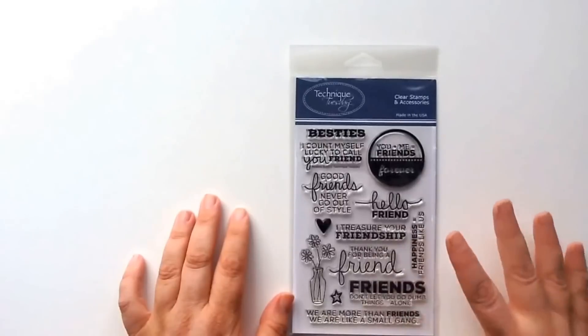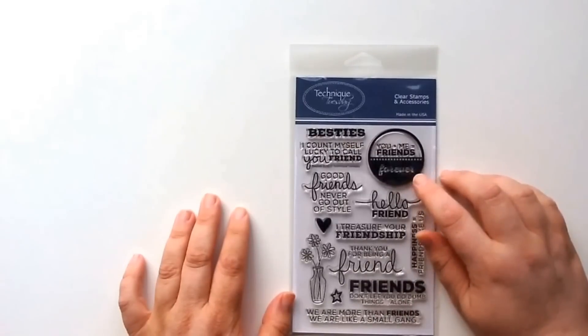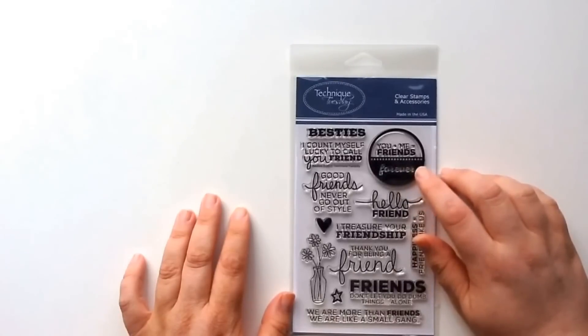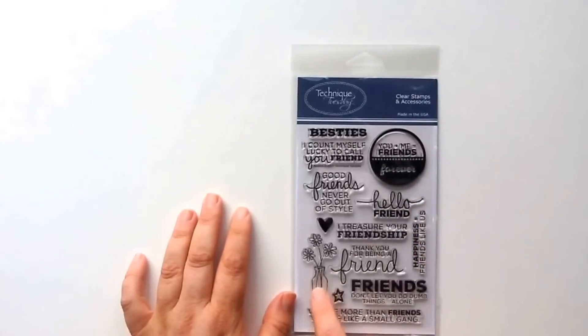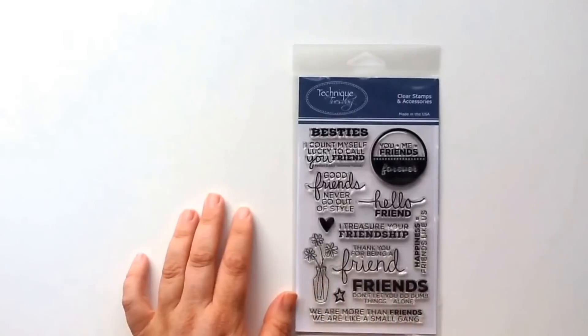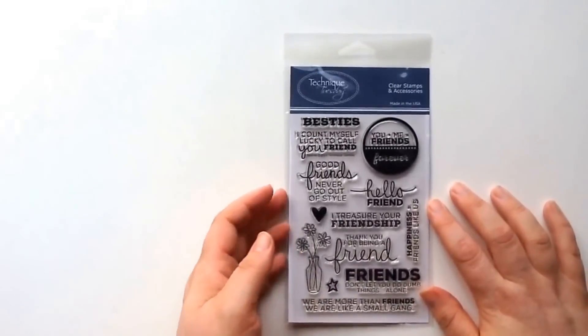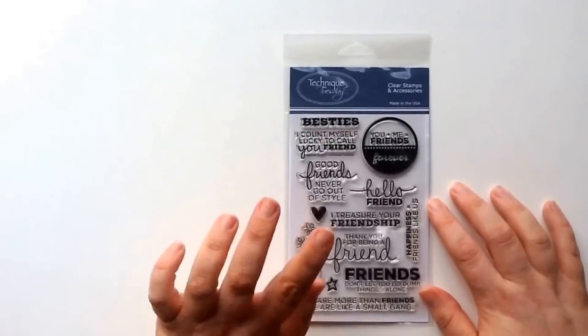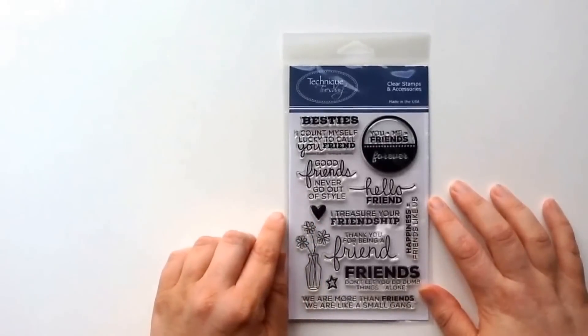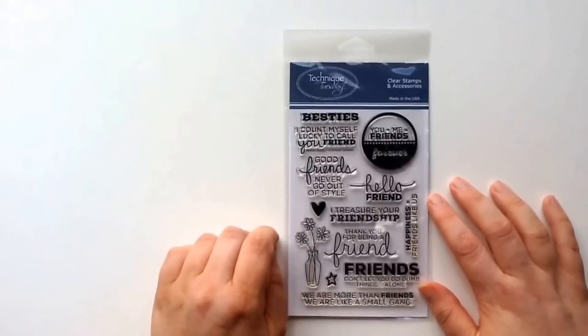That circle works perfectly with a one and three quarter inch circle punch as well as Technique Tuesday's circles die. Also, how about that flower? Can't wait to stamp that and color that. By the way, if you belong to the Memory Keeper Studio auto ship program, this is the stamp set you'll receive in August 2015.